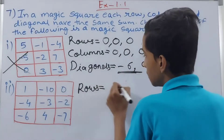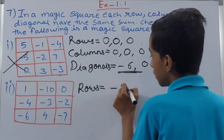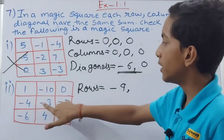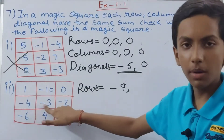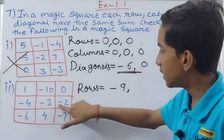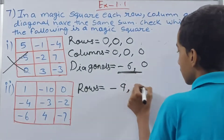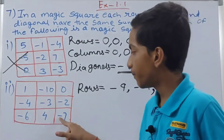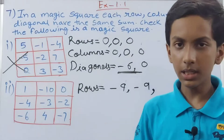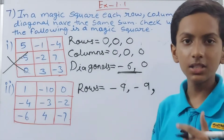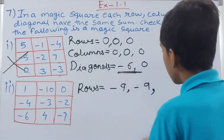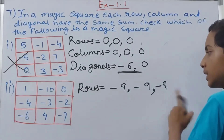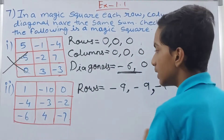Now on to the second square. Adding the rows: first row is 1 minus 10 — ignoring the zero — gives minus 9. Second row: minus 4 minus 3 minus 2 — minus 4 minus 3 is minus 7, minus 7 minus 2 is minus 9. Third row: minus 6 and minus 7 gives minus 13, minus 13 plus 4 — different signs so subtract — gives minus 9. All three rows sum to minus 9.